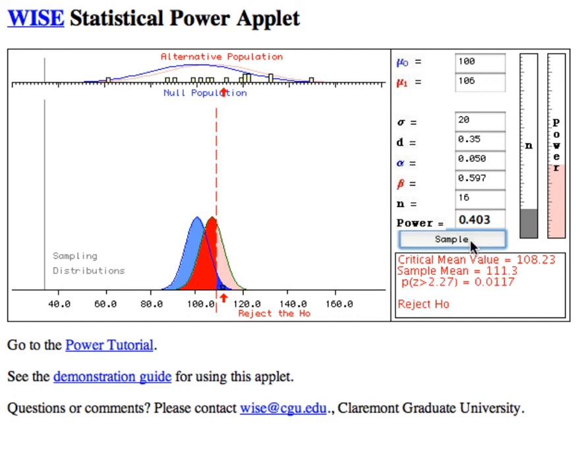So as I keep doing this on average, if I do this an infinite number of times, about 40% of the time I should reject the null hypothesis when it is, in fact, false.